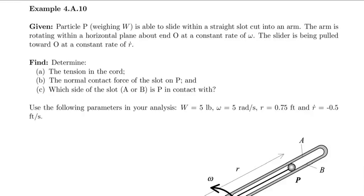Okay, so in this example we have a particle P which weighs W, and we're told that the particle is able to slide within a straight slot which is cut into an arm. The arm is rotating within a horizontal plane about end O at a constant rate of omega. We're also told that the slider is being pulled towards O at a constant rate of r dot.